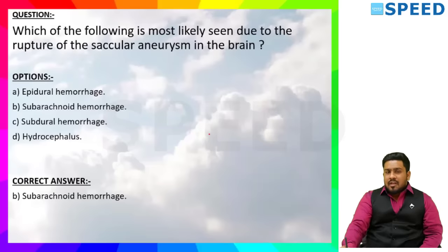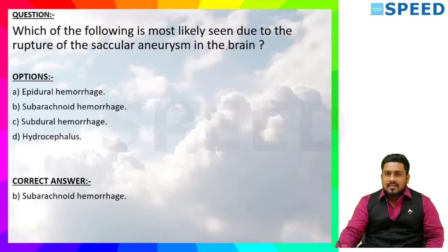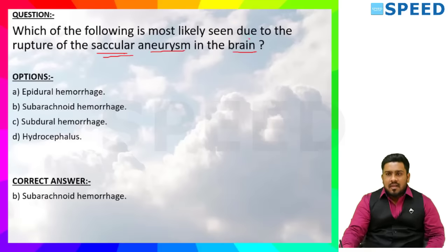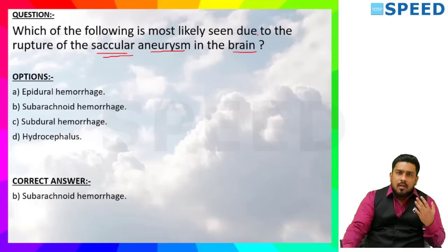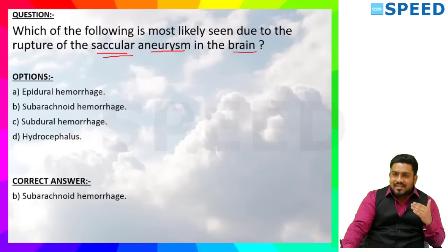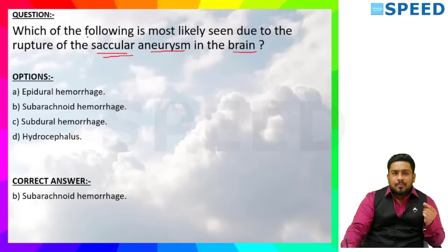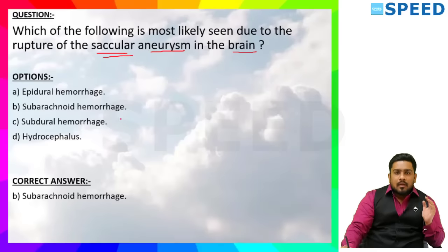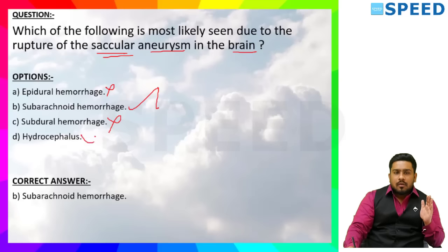Next question: Which of the following is most likely seen due to the rupture of saccular aneurysm in the brain? This is also a radiology-integrated question — once the saccular aneurysm in the brain ruptures, the patient presents to CT where we identify subarachnoid hemorrhage. Whenever this aneurysm ruptures, it leads to subarachnoid hemorrhage. It is not epidural hemorrhage, not subdural, not hydrocephalus. It is subarachnoid hemorrhage. Another MCQ: most common cause of atraumatic subarachnoid hemorrhage is rupture of berry aneurysm.